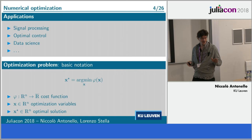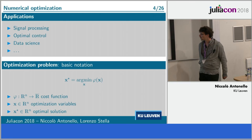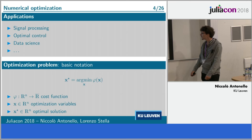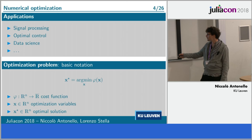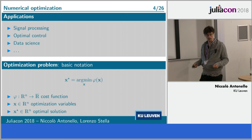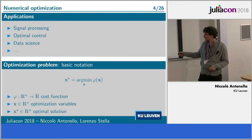Numerical optimization has broad applications in signal processing, optimal control, data science, machine learning, and much more. To give a brief introduction on the basic notation: the simplest optimization problem has a cost function P that maps an optimization variable — for example, an n-dimensional vector with real or complex variables — to a cost which you would like to minimize. Once you minimize this, you get your optimal solution.